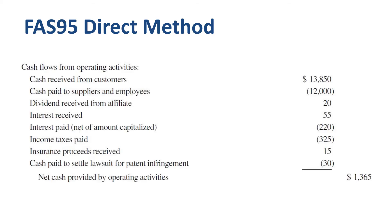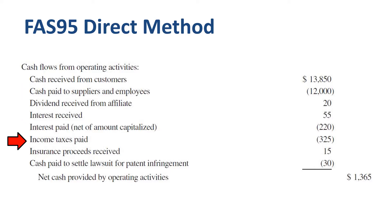Here's the example from FAS95 on reporting CFOA using the direct method. You start off with cash received from customers of 13.9 billion, a positive number — a cash inflow. You deduct cash paid to suppliers and employees, 12 billion, a negative number — a cash outflow. Then account for smaller items such as interest paid, 220 million, and income taxes paid, 325 million.